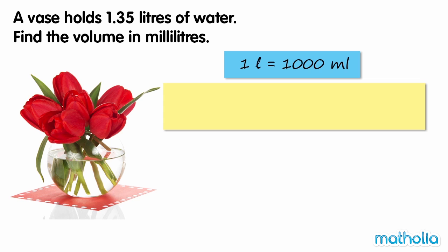To find the volume in millilitres we need to multiply 1.35 by 1000. Recall that we can multiply by 1000 by shifting the decimal point three places to the right.